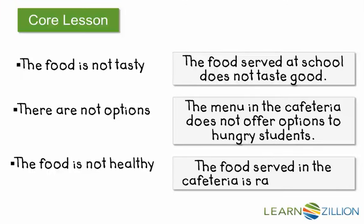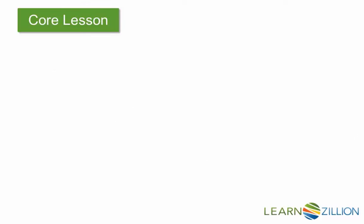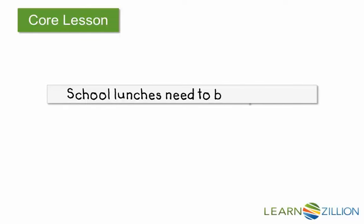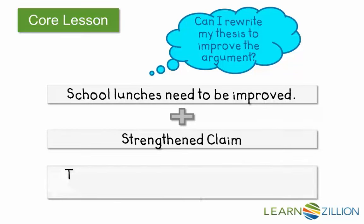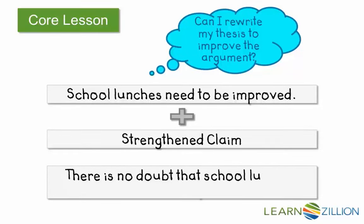How about the food is not healthy? Let me think. The food served in the cafeteria is rarely healthy. I went from 'not' to 'rarely,' but I think this could work for me. And now I'm going to take a look at my thesis statement. Let's see if I can strengthen this up a little bit — can I rewrite my thesis to improve my argument? Let me try this: There's no doubt that school lunches need to be improved. That's a much stronger claim. I'm obviously very argumentative here. Let's see what this looks like all put together.